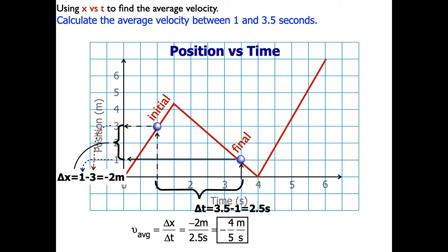So the displacement divided by the time, that's negative 2 divided by 2.5, is negative 4 fifths meters per second.